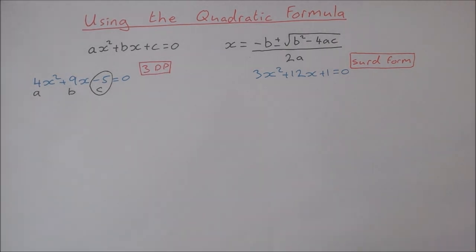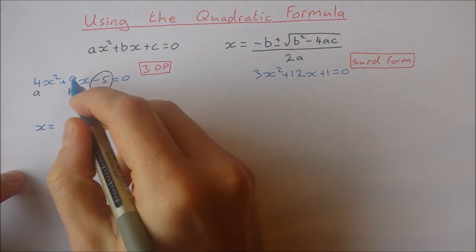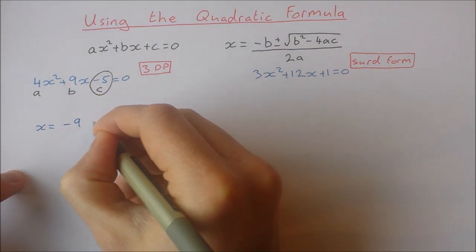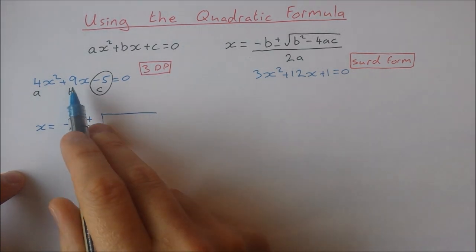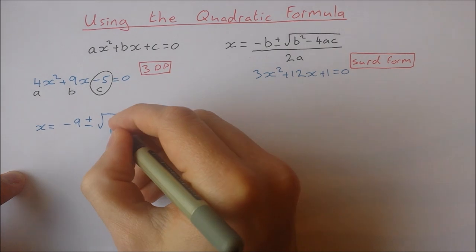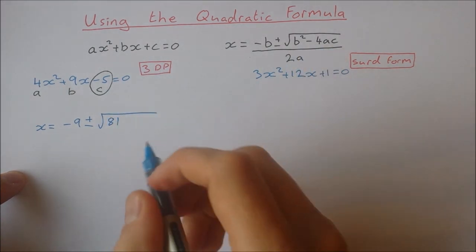Okay so let's fill in our formula. So x is equal to minus b, so that's minus 9, plus and minus the square root of b squared, so that's 9 squared which is 81, minus 4ac.